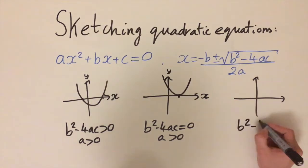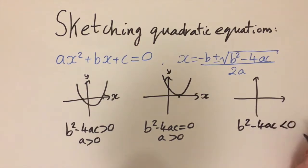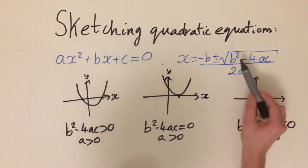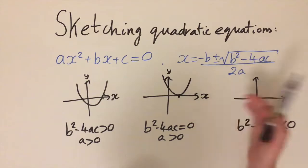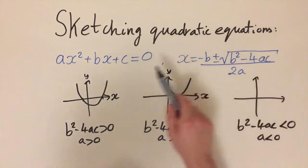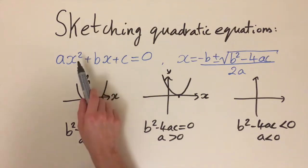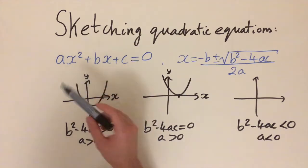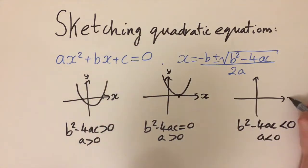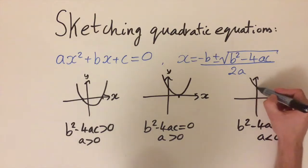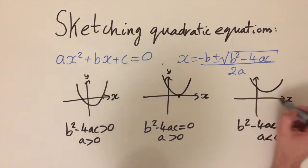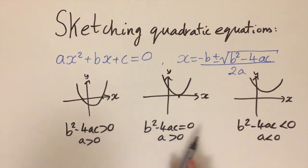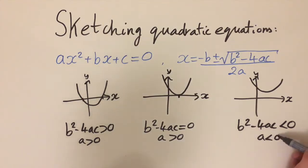When b squared minus 4ac is negative, plugging a negative number under the square root gives no real solutions. No solutions means the quadratic equation is never satisfied, so the graph never crosses the x-axis. This corresponds to a parabola that goes upward but never touches the x-axis at all.